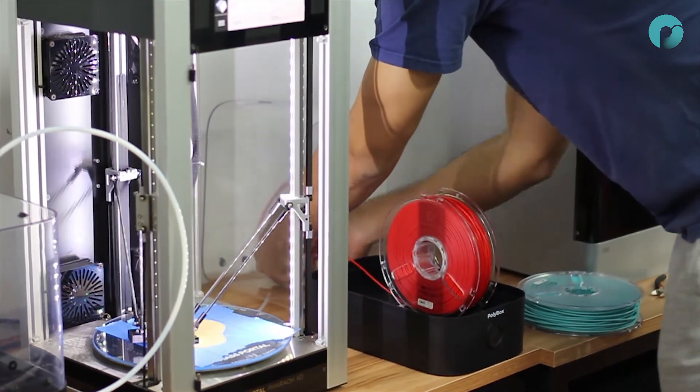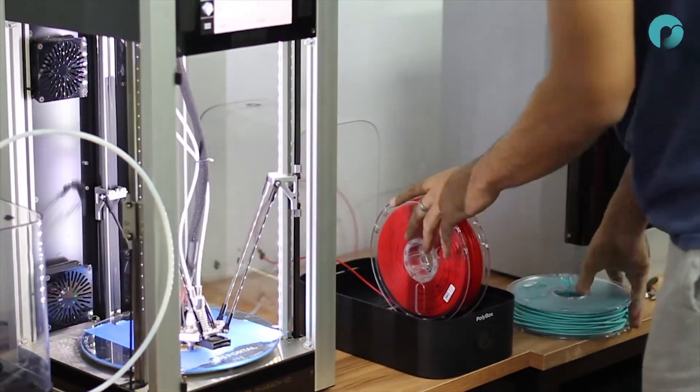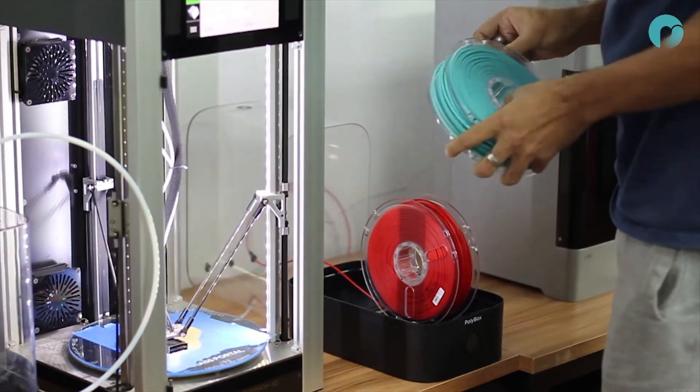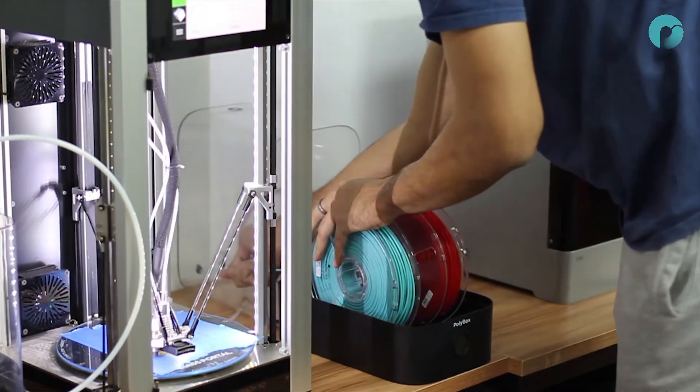Once the tubes are in place, you can open the polybox and feed the filament through the exit holes. You can now close the box and start printing.